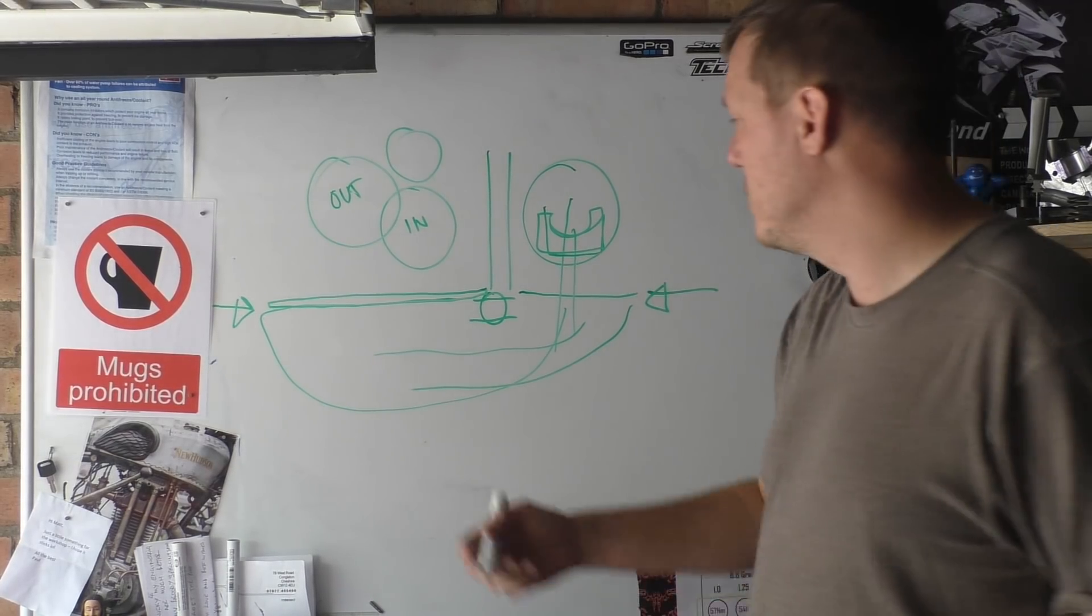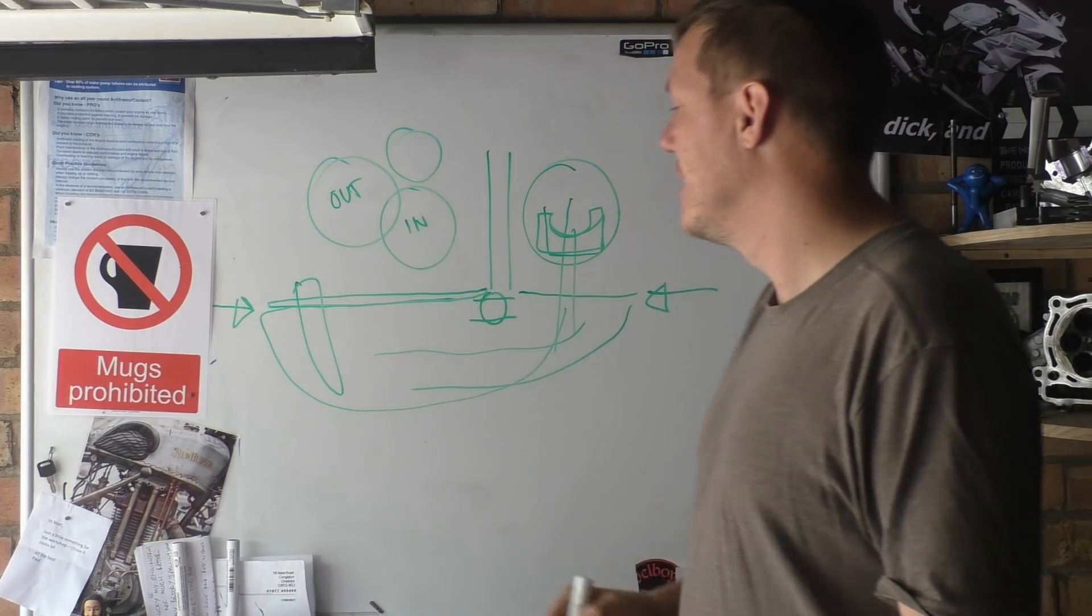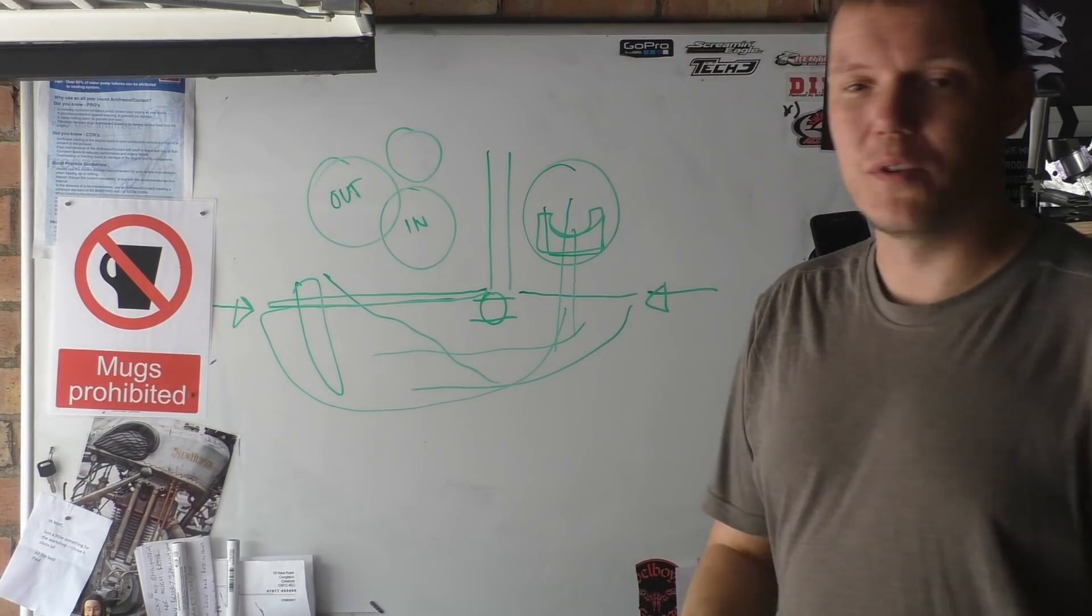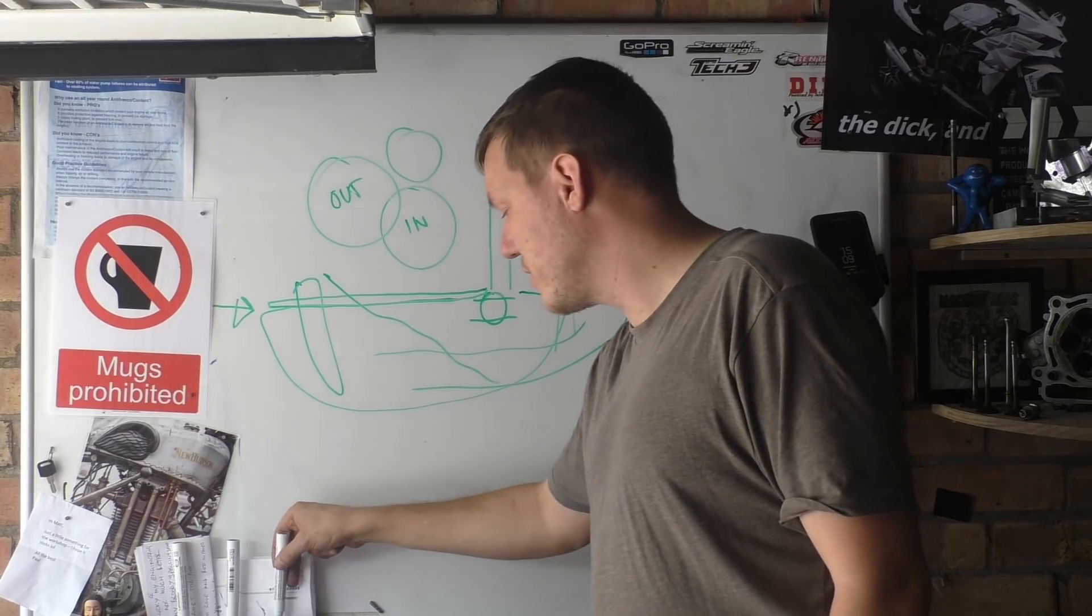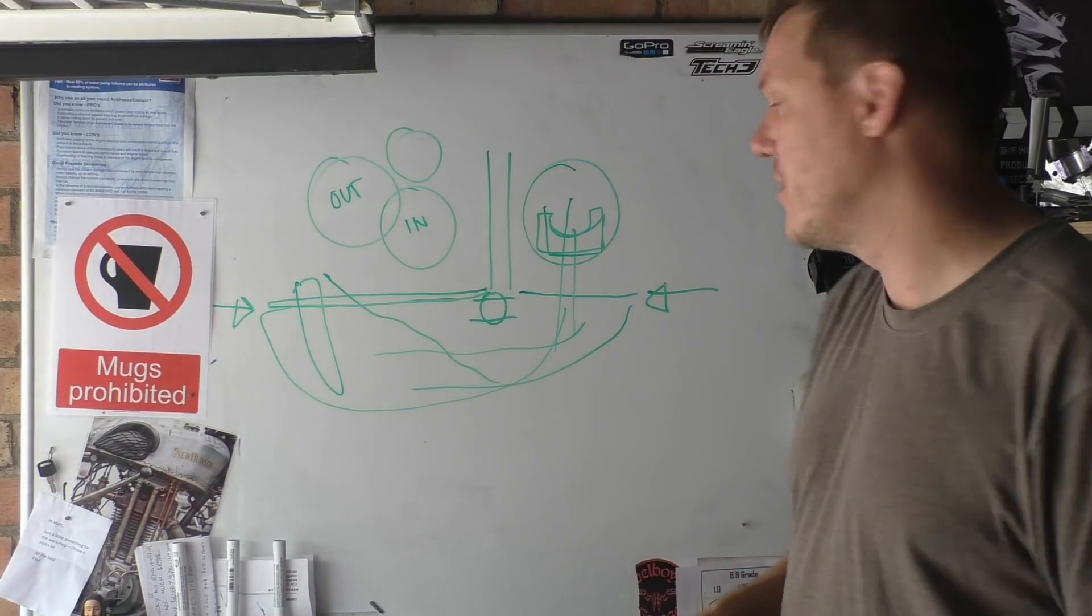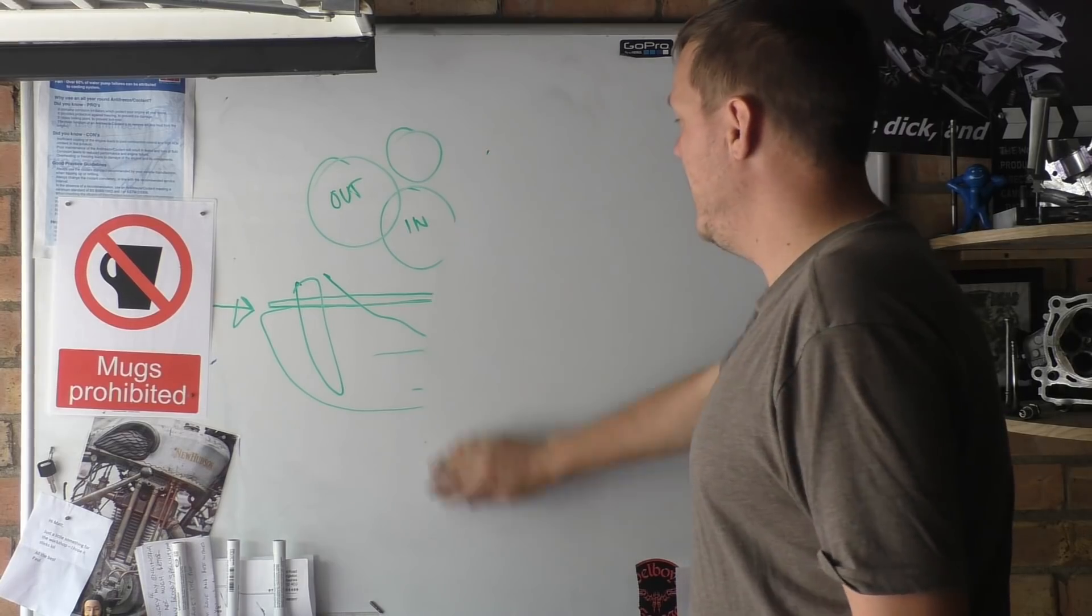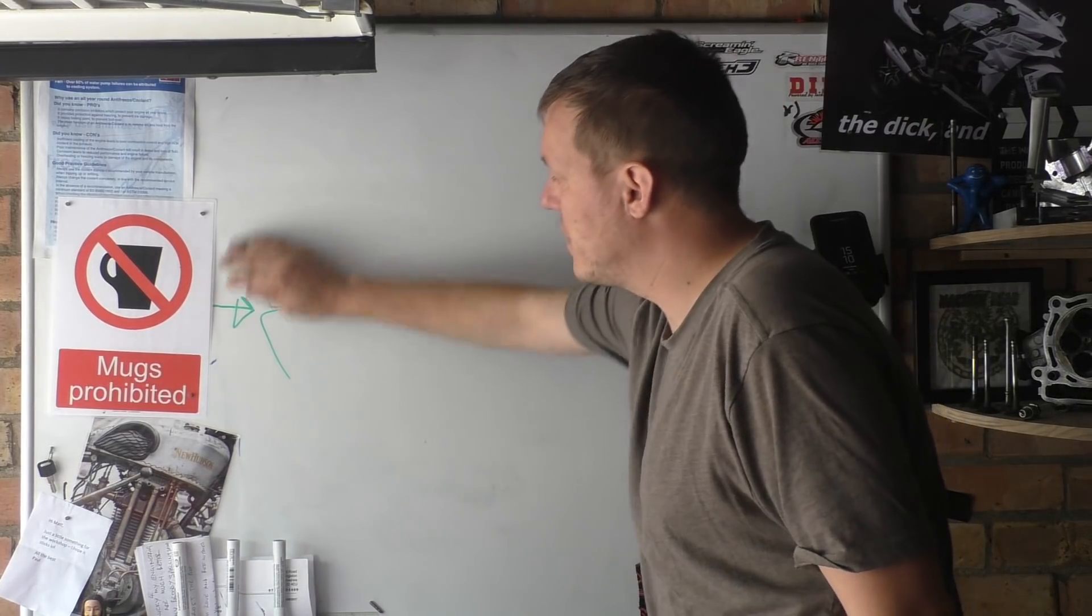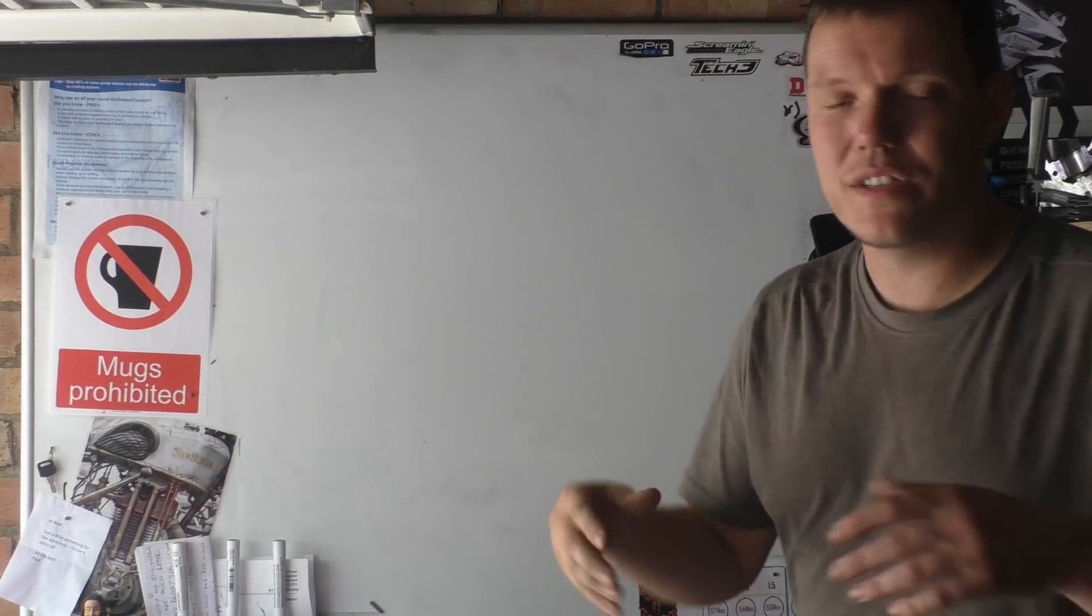Yes, if you excessively wheelie your bike for too long, depending where your pickup tube is, if your pickup tube's at the back and you're wheeling it, it's not going to be much of a problem. If your pickup tube's towards the front then yes you are going to starve your engine out and probably start cooking it.